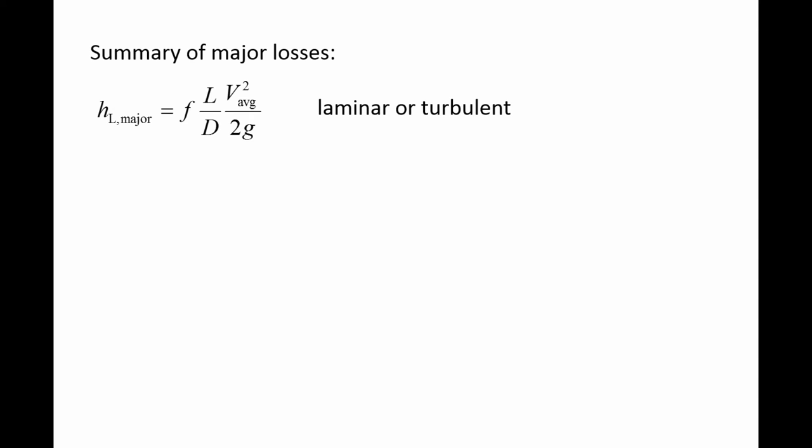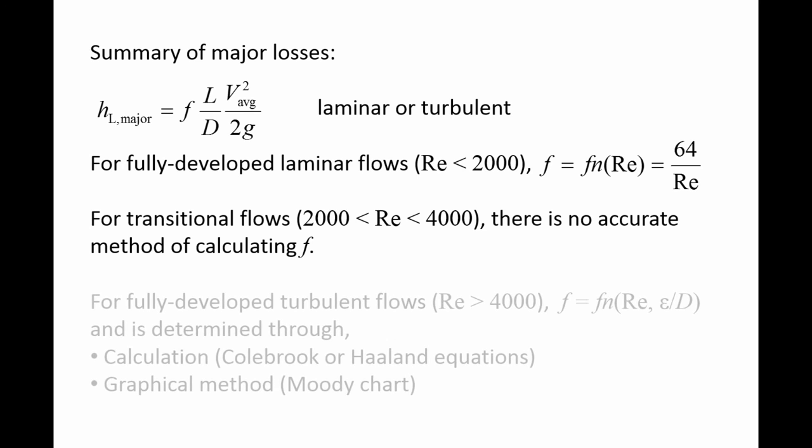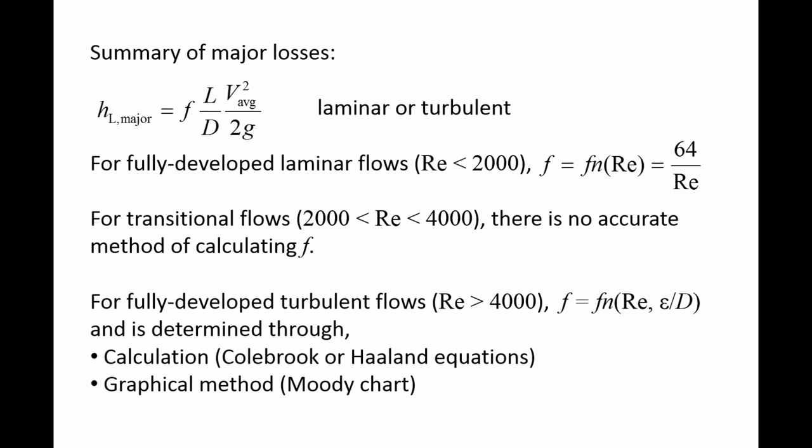In summary, the Darcy-Weisbach equation is used to calculate the major losses for both fully developed laminar and fully developed turbulent flows. For fully developed laminar flows, the friction factor is only a function of the Reynolds number, and is equal to 64 over the Reynolds number. For transitional flows, there is no accurate method for determining the friction factor, and for fully developed turbulent flows, the friction factor is a function of both the Reynolds number and the relative roughness. It is determined through calculation using the Colebrook or Haaland equations, or using the Moody chart, which is a graphical method.